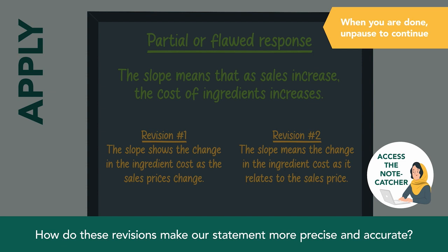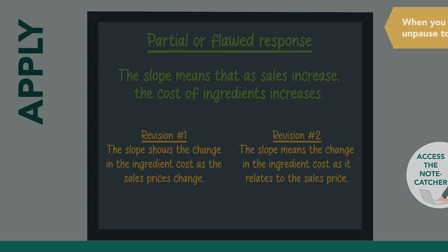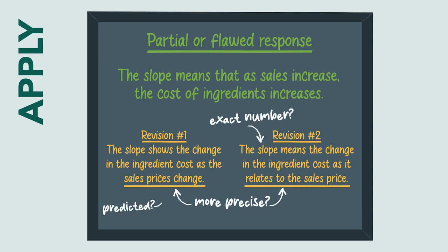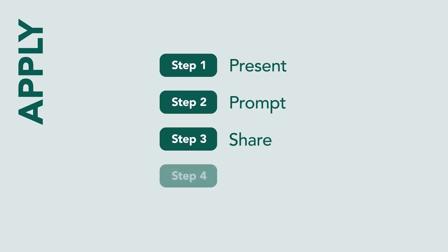You may have made a similar revision or were more precise. The goal is to identify further areas where more precise language is needed and engage students in another round of drafting to hone their revisions further. In the final step, refine, the teacher gives students an opportunity to refine their first draft response. Let's see this step modeled.